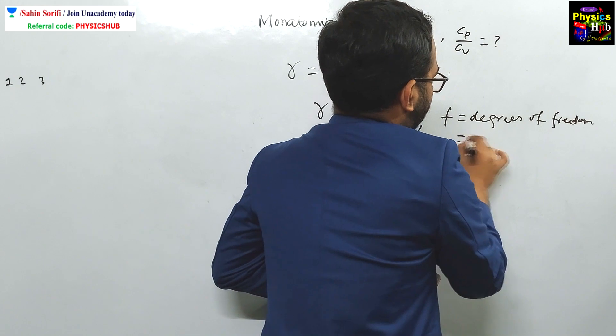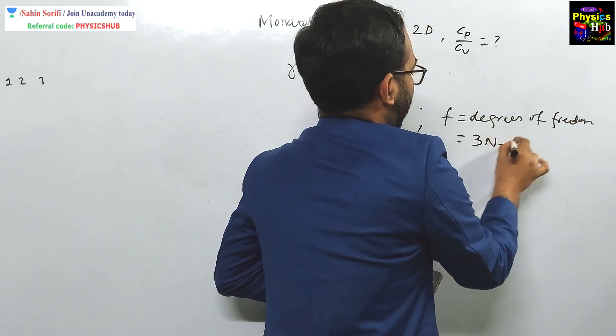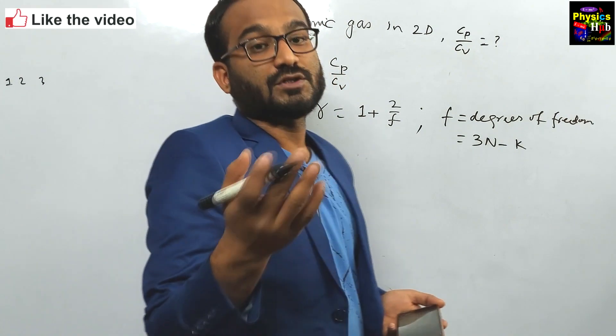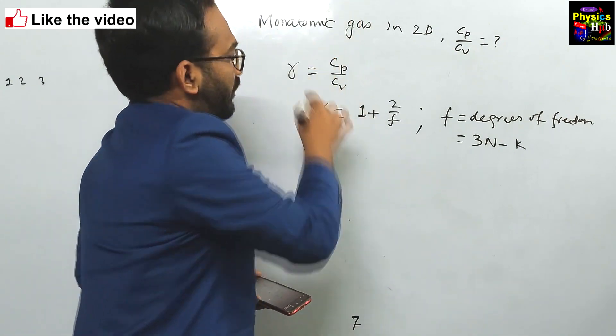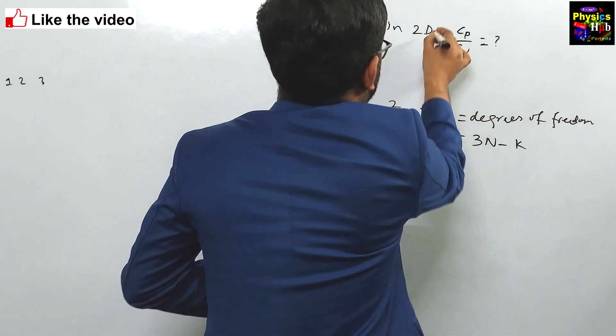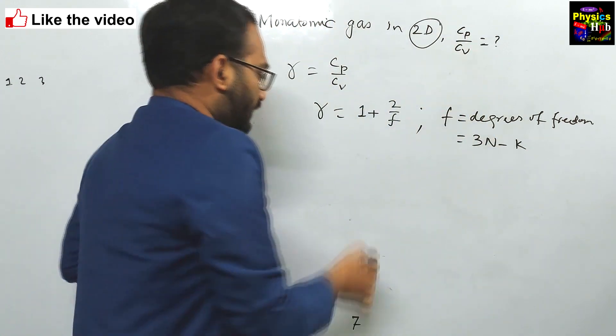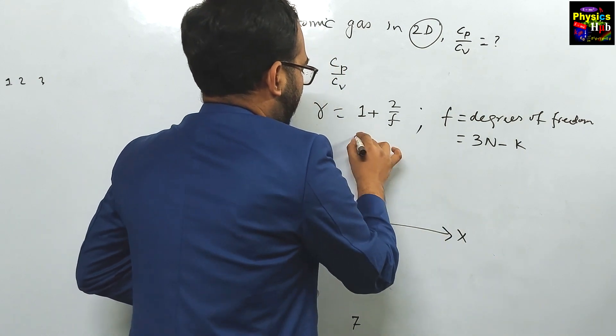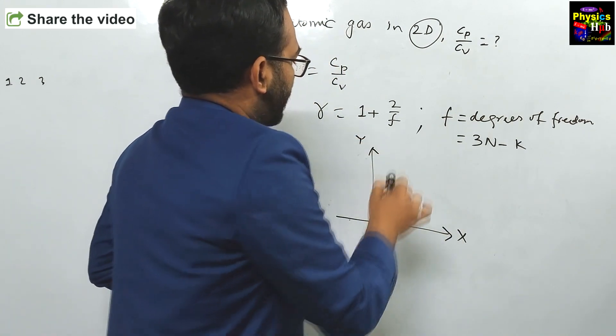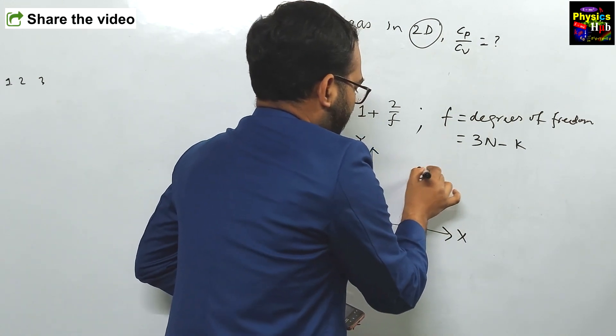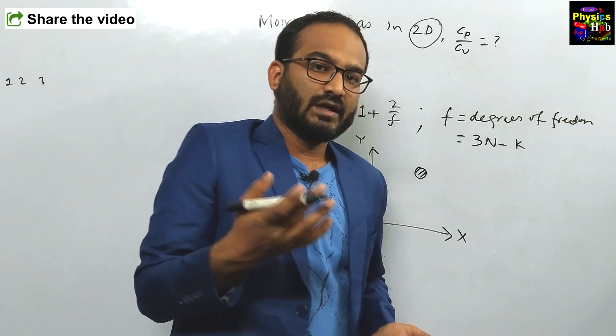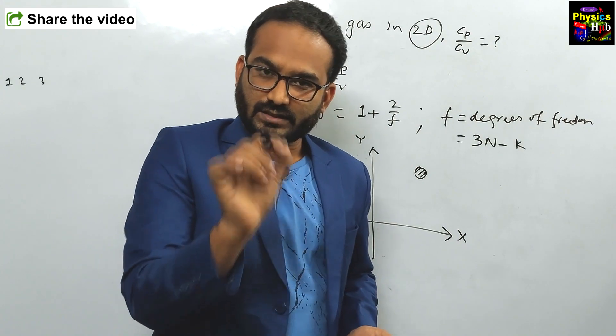Degrees of freedom, F, it has the following formula: 3N minus k. N is the number of molecules and k is the number of constraint equations. Here you have been given a monoatomic gas and you have to consider two dimensions. So let us draw two dimensions. Let us say this is x, this is y. This monoatomic gas molecule is allowed to move only in two dimensions. What does it mean? It means we are restricting the third dimension.